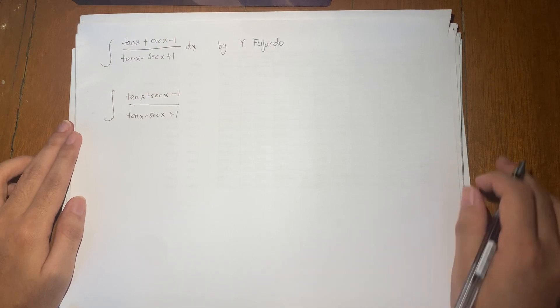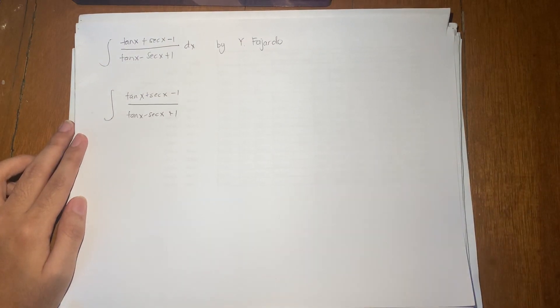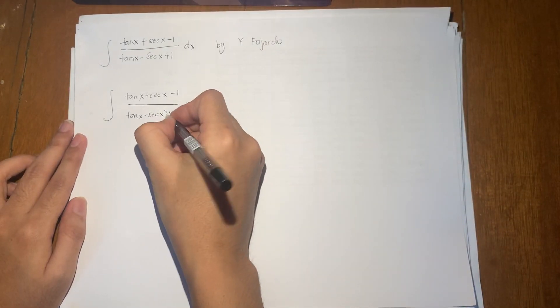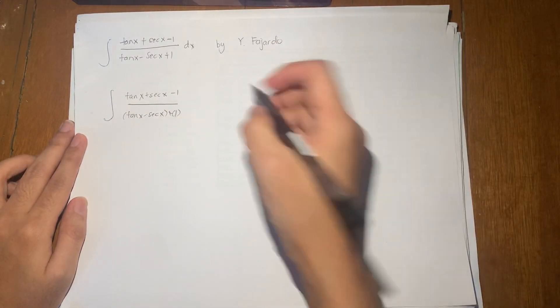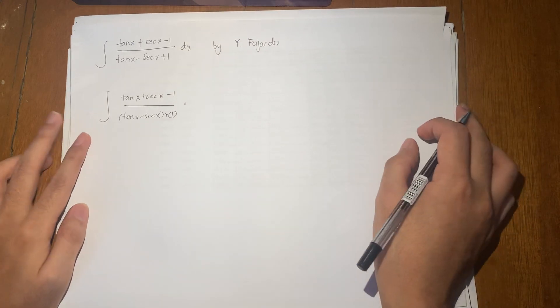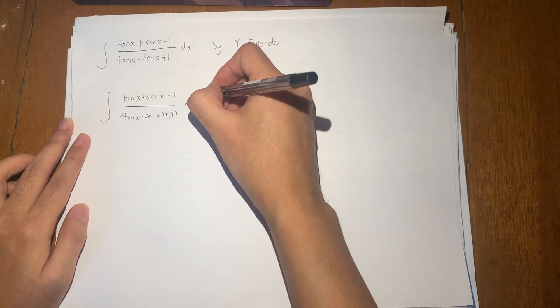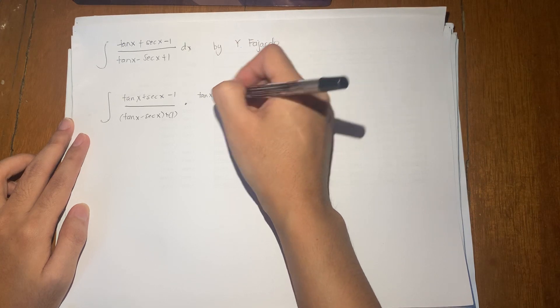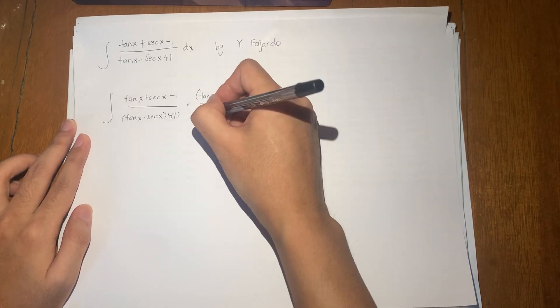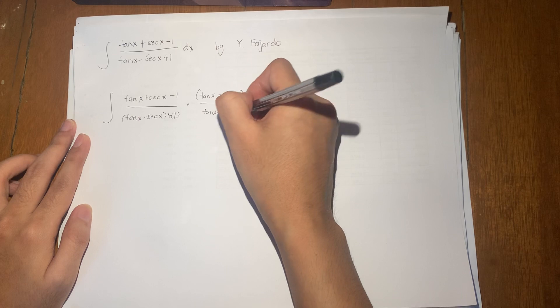In this case, what I want to consider as the conjugate is the term involving this group. So that's tan x minus secant x and 1. So what I want to do is multiply the numerator and denominator by tan x minus secant x minus 1.